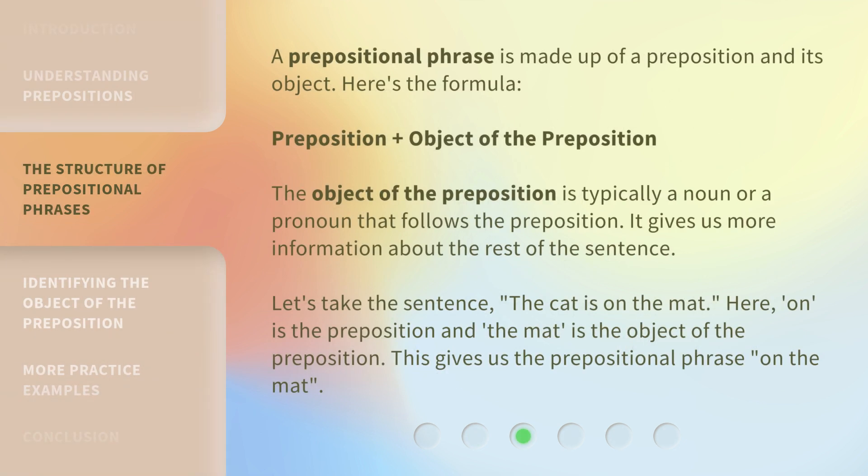A prepositional phrase is made up of a preposition and its object. Here's the formula: preposition plus object of the preposition. The object of the preposition is typically a noun or a pronoun that follows the preposition. It gives us more information about the rest of the sentence.